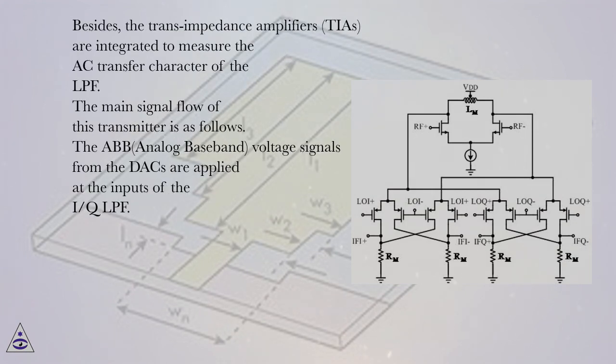Besides, the trans-impedance amplifiers, TIAs, are integrated to measure the AC transfer character of the LPF. The main signal flow of this transmitter is as follows. The ABB, analog baseband, voltage signals from the DACs are applied at the inputs of the IQ-LPF.